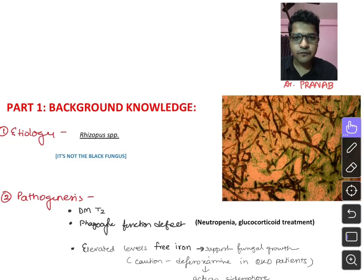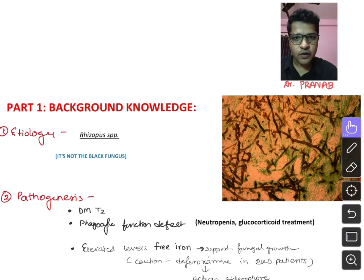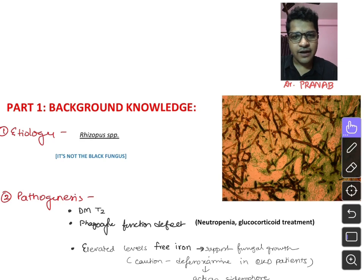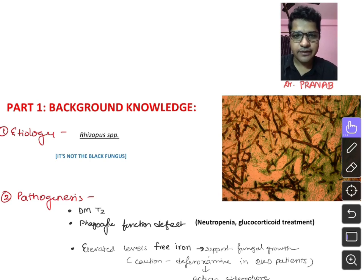Mucormycosis is a systemic mycosis caused by the Rhizopus group of aseptate fungi. There is a media hype calling it 'black fungus' because the effect of the fungus on the skin leads to necrosis and blackening. However, black fungus is a separate genus in the fungal family, so doctors should not use this colloquial term. We should call it mucormycosis and understand the spectrum and pathogenesis of the disease.